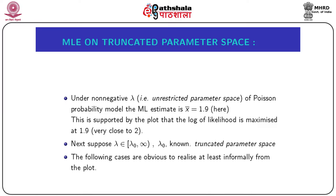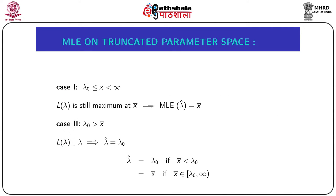Next, suppose λ belongs to the closed interval [λ₀, ∞), where λ₀ is a known positive number — a restricted parameter space for Poisson(λ). The following cases are straightforward to realize from the plot. Case 1: λ₀ ≤ x̄ < ∞, i.e., x̄ lies in [λ₀, ∞). Since x̄ is included in the restricted region, the likelihood function within [λ₀, ∞) is again maximum at x̄.